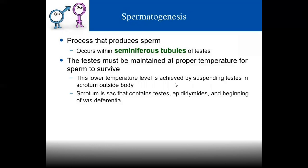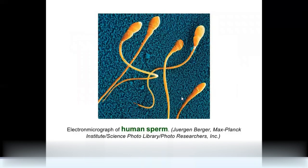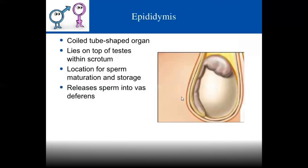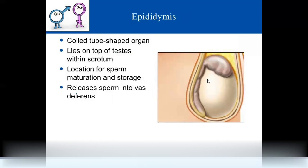This picture shows an electron micrograph of sperm. The epididymis is a coiled structure that wraps around the testes. Sperms are stored and mature in the epididymis before being released into the vas deferens.